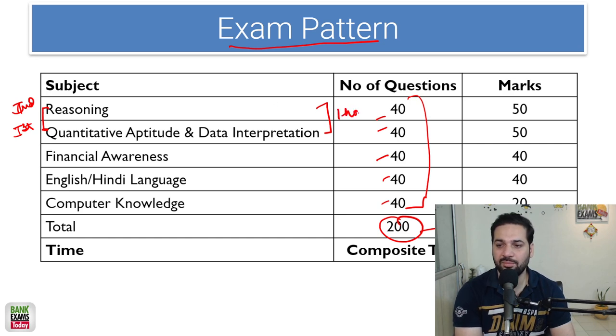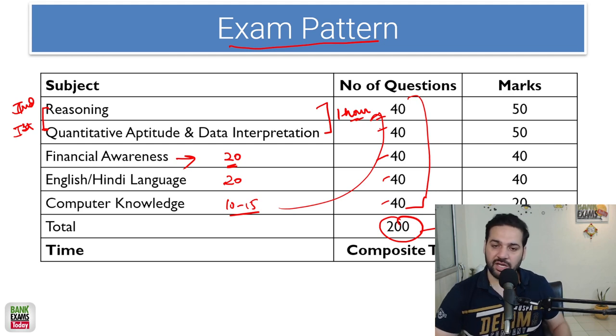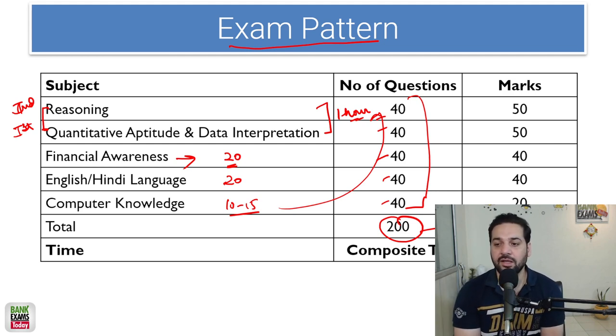Make sure ki aap jo questions apne attempt kar rahe hai, one hour mein aapko yeh dono sections karne hai, one hour or may be one hour and ten minutes maximum. And then financial awareness, it is not time consuming, most probably you will be able to complete financial awareness within like 20 minutes easily. English language again 20 minutes, computer knowledge may be 10 to 15 minutes.